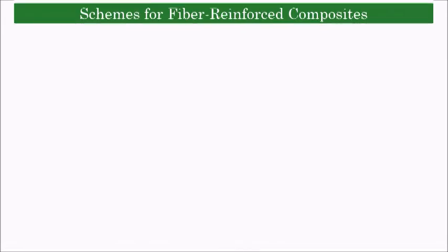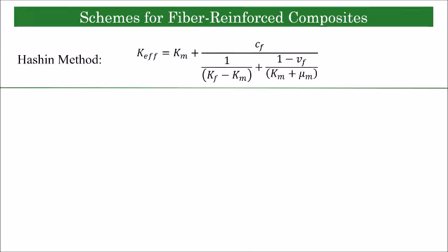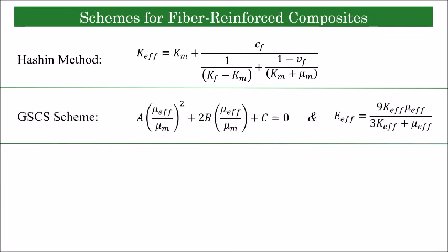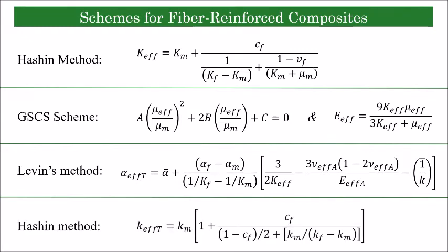For predicting effective properties of equivalent fiber-reinforced composites, the following schemes are implemented. Hashin method used for calculating effective bulk modulus. Generalized self-consistent scheme used for calculating effective elastic modulus. This method comprises seven equations that need to be solved concurrently, only two of which are presented here. To find effective transverse coefficient of thermal expansion, five equations must be solved simultaneously, one of which is presented here. Finally, Hashin method for calculating effective thermal conductivity is implemented. We developed MATLAB codes to use these schemes iteratively for homogenization of composites with more than one type of inclusion.